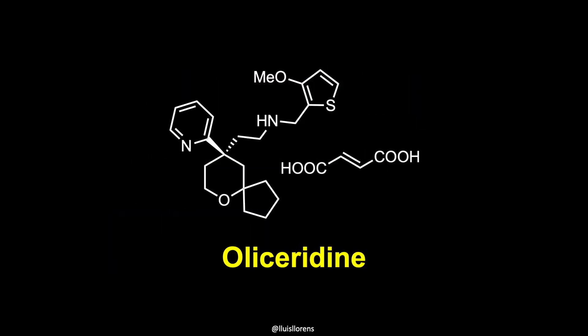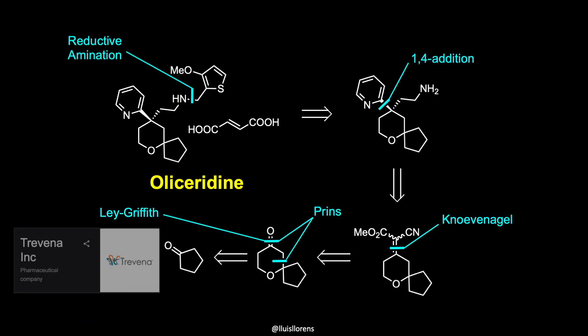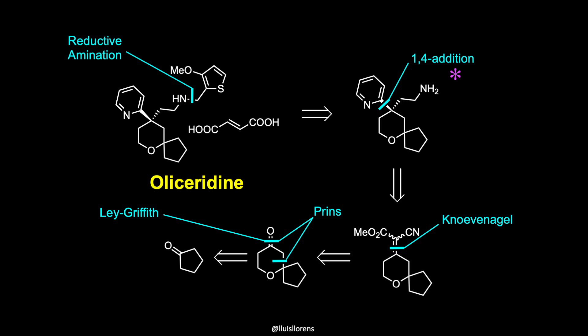Olyceridin is a T-shaped chiral compound that presents a pyridine and a thiophene ring and a spirocycle. The synthesis of the molecule was first described by Trevena, and it involves a reductive amination, a 1,4-addition of the pyridine ring to an intermediate, followed by decarboxylation and reduction of the nitrile to the primary amine, a Knoevenagel condensation reaction, and a Ley-Griffith oxidation reaction applied to the alcohol obtained from a Prins cyclization.